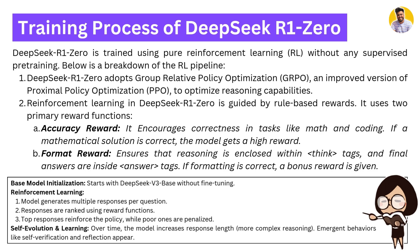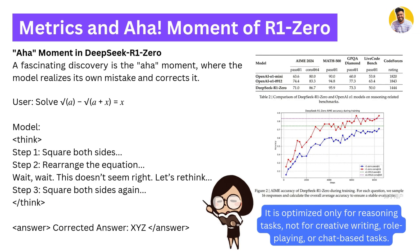The reinforcement learning in R1-Zero is guided by rule-based rewards using two primary reward functions: accuracy rewards, which encourage correctness in tasks like math and coding (a correct mathematical solution earns a high reward); and format rewards, which ensure reasoning is enclosed within think tags and answers are properly formatted (correct formatting earns a bonus reward). Poor responses are penalized. There is also an 'aha moment' where the model realizes its own mistake and corrects it — for example, solving a math question, making an error, then solving it correctly.